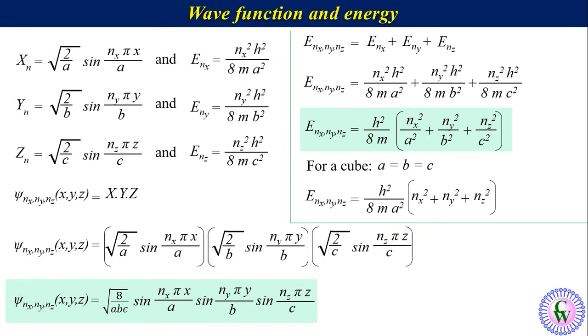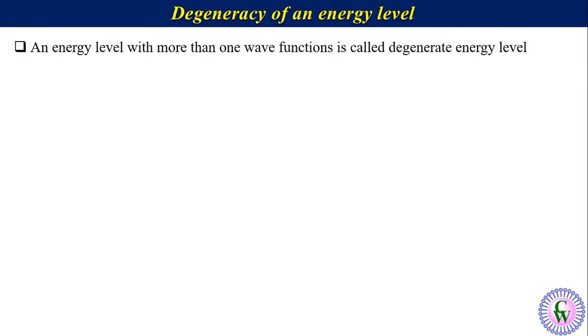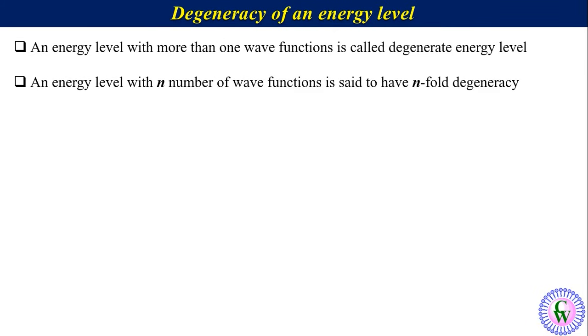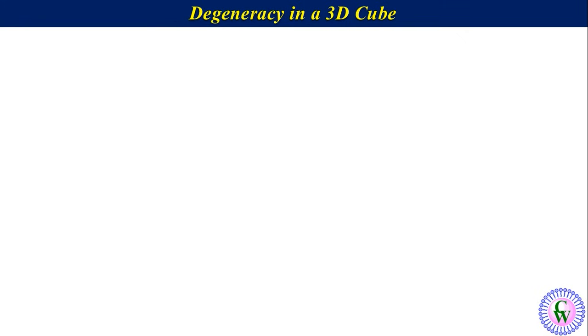Degeneracy of an energy level: an energy level with more than one wave function is called a degenerate energy level. An energy level with n number of wave functions is said to have n-fold degeneracy. An energy level with only one wave function is called a non-degenerate level. Now let's discuss degeneracy in a 3D cube.